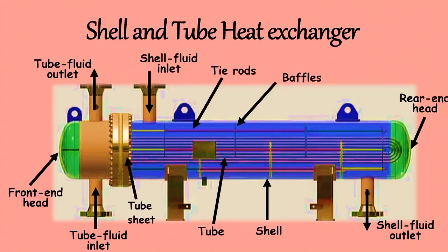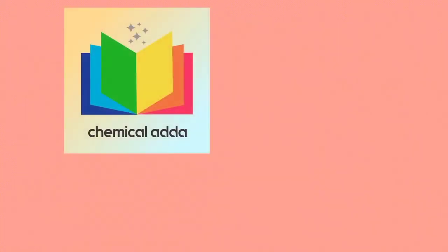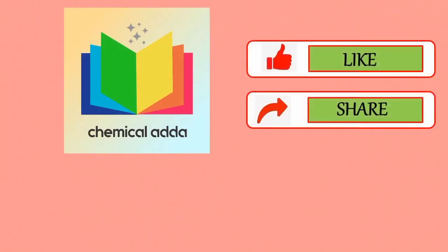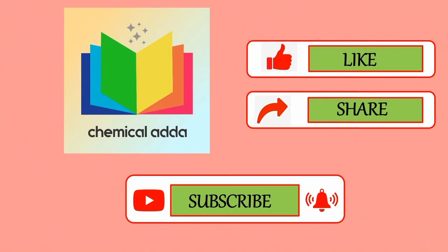That's all about the components of shell and tube heat exchanger. In the next part of this video, we will discuss terms like tube pitch, clearance, what is a 1-1, 1-2, and 2-2 shell and tube heat exchanger, and types of baffles. So keep watching, and if you like this video, please like, share, and subscribe to my YouTube channel, Chemical Edda.